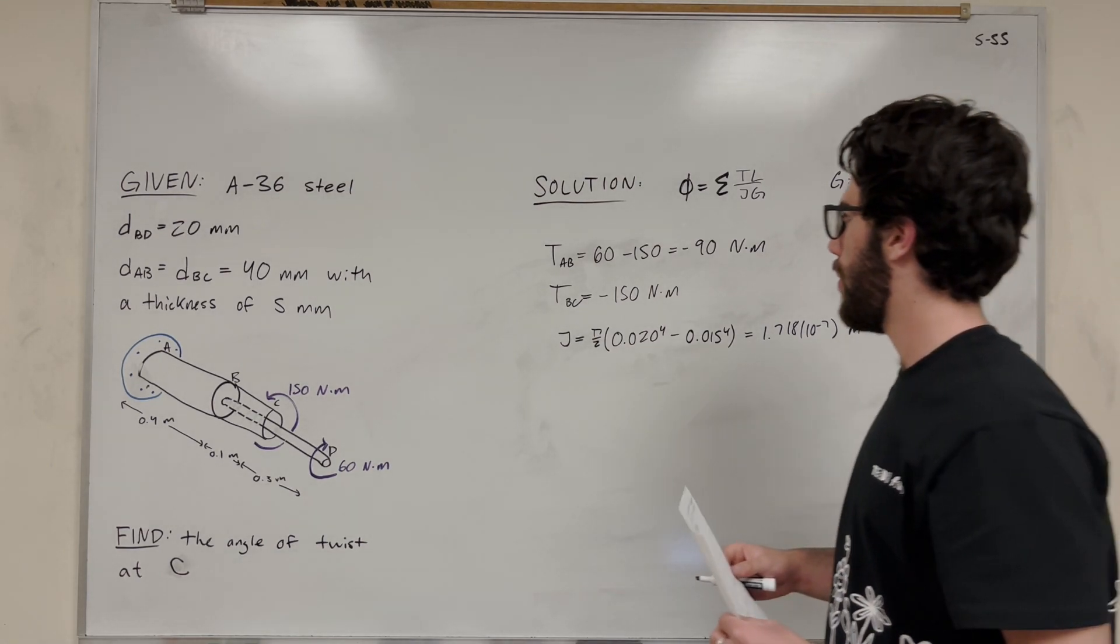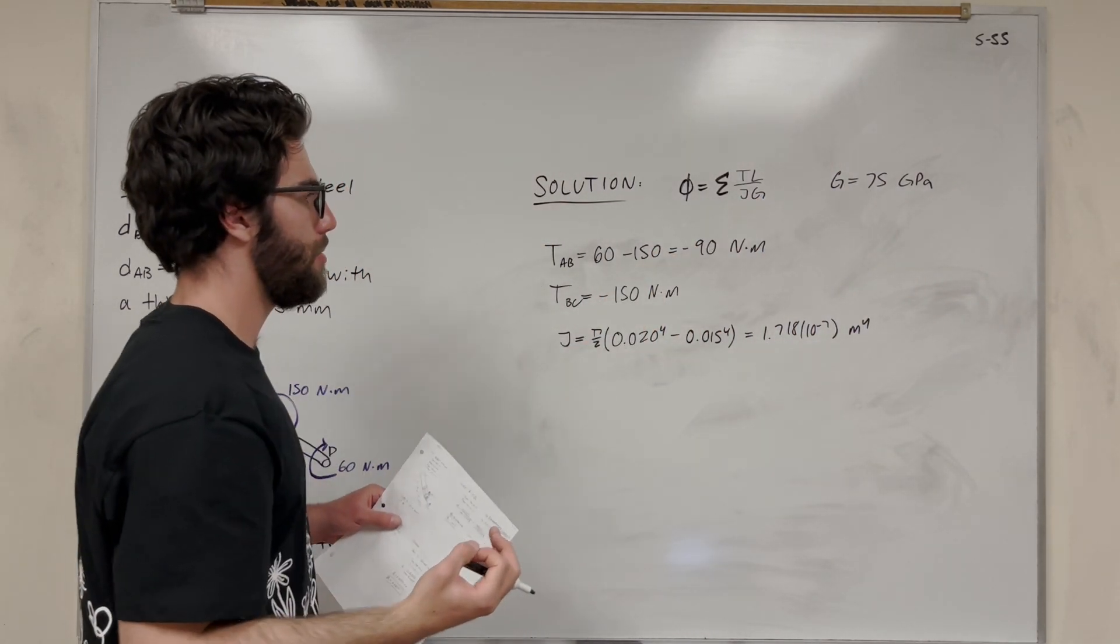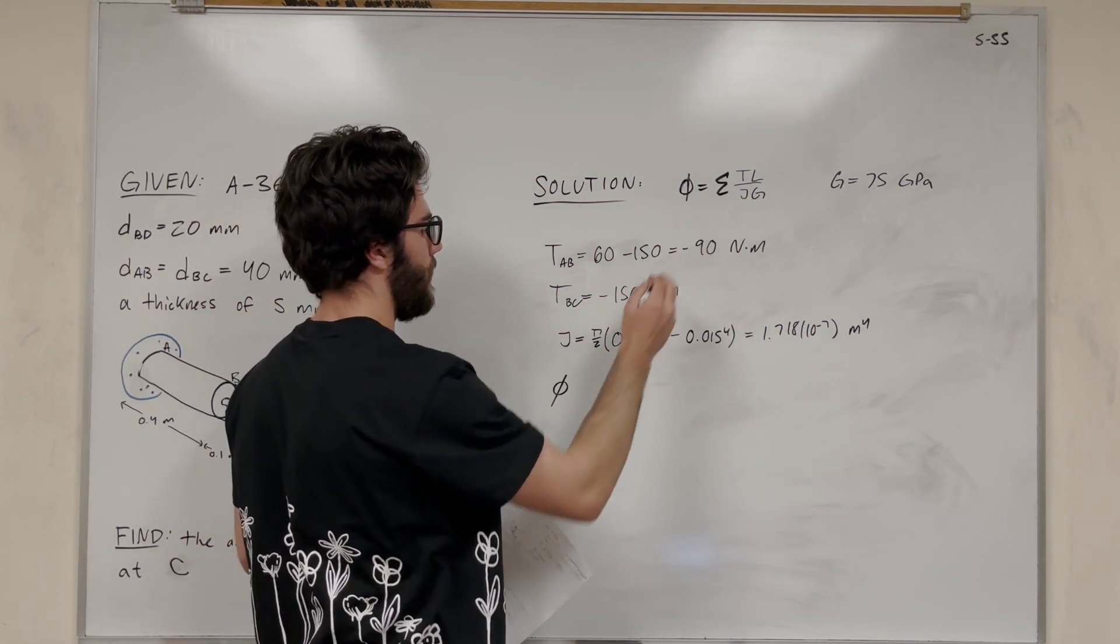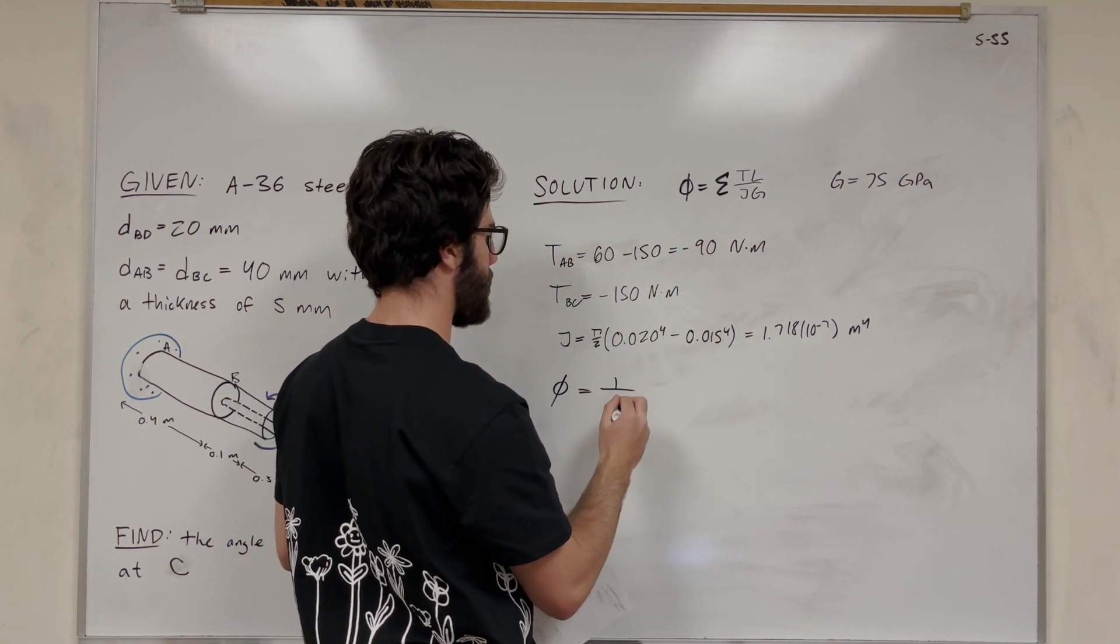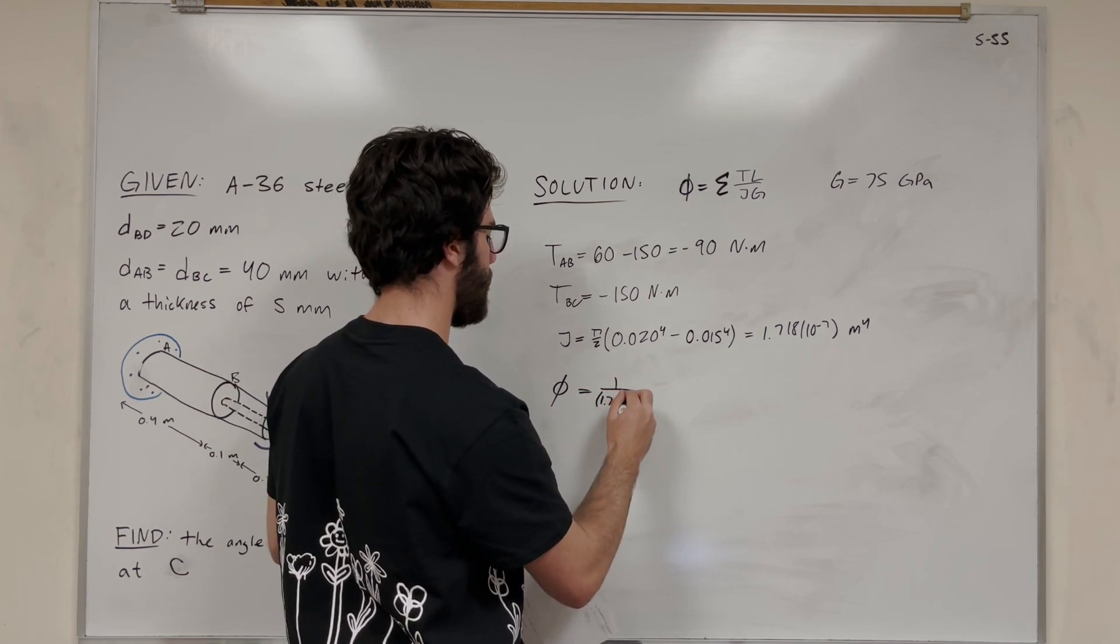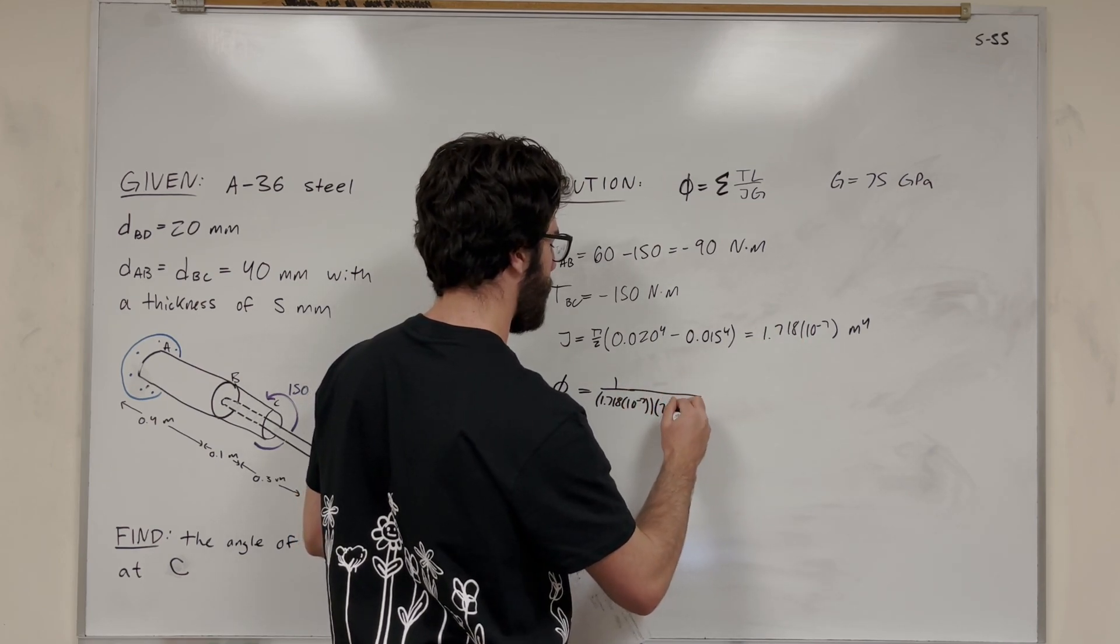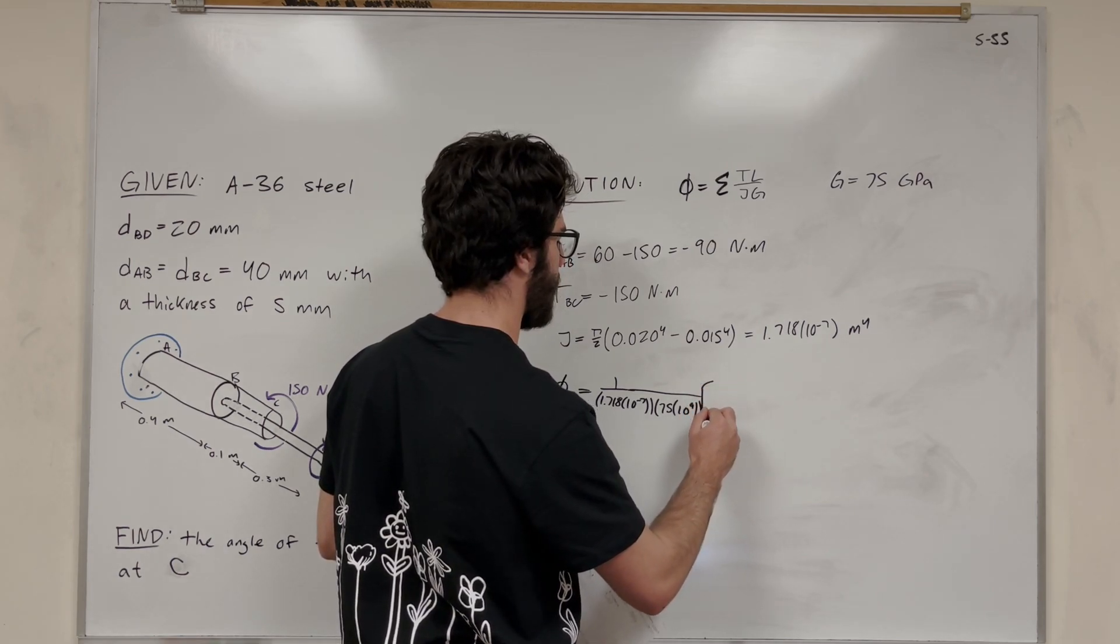Then we can go ahead and plug everything into our equation. We're going to add this up for each part. We can factor out something here. We know that they both have the same polar moment of inertia and they're going to have the same modulus of rigidity. So we can factor out a JG. Let's put in the J, 1.718 times 10 to the negative seventh. Then G is at 75 GPa, we need to multiply it by 10 to the ninth to get just Pascals instead of gigapascals.